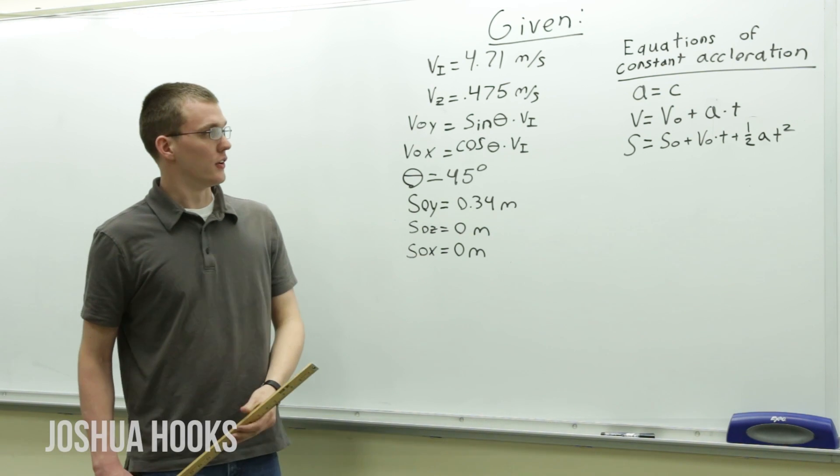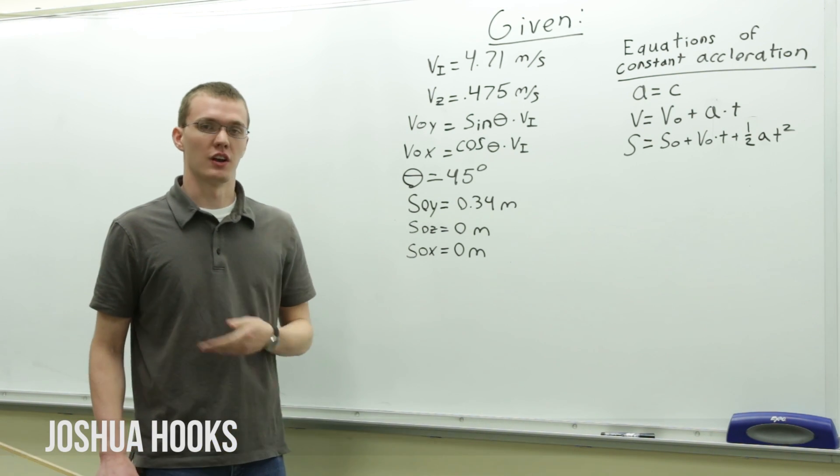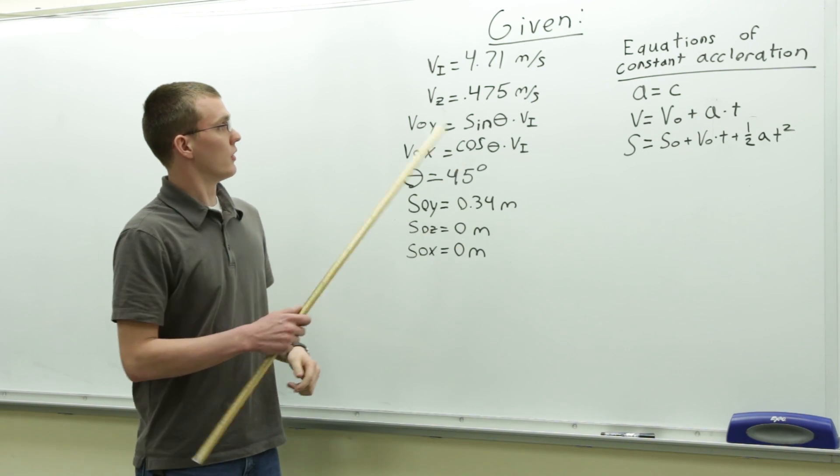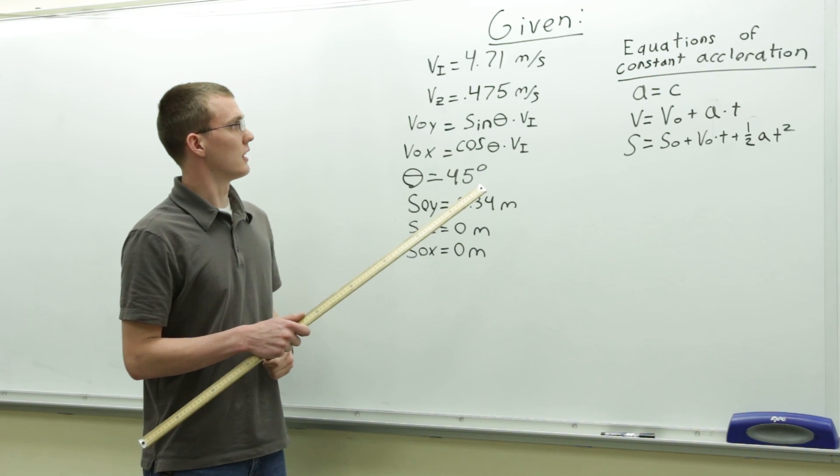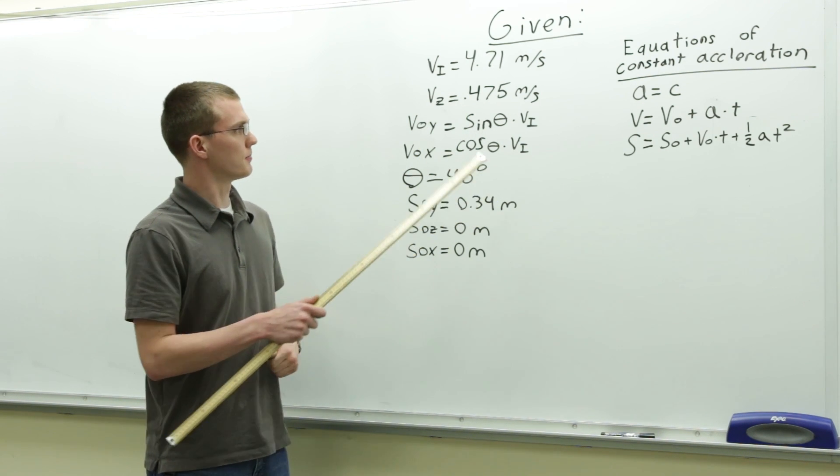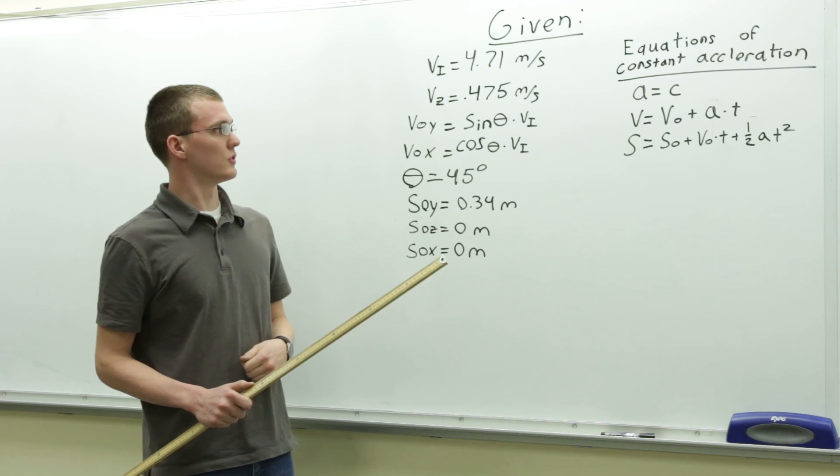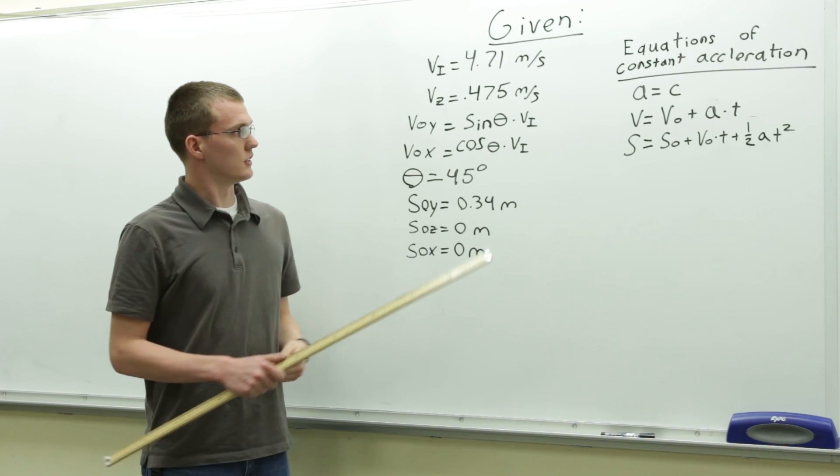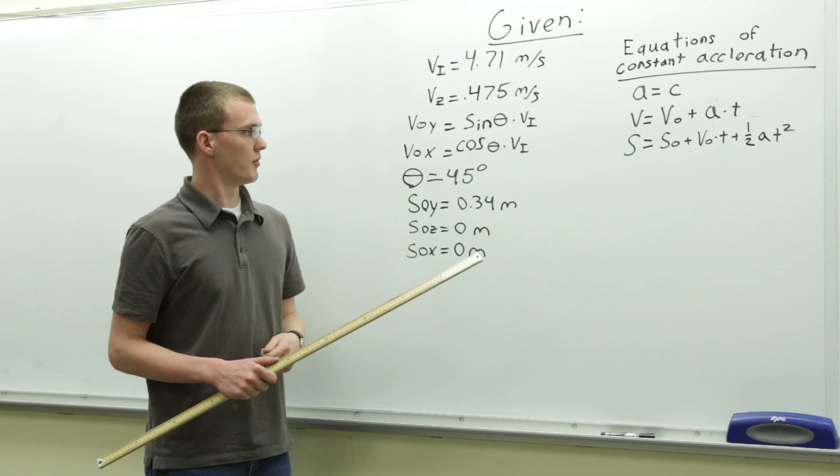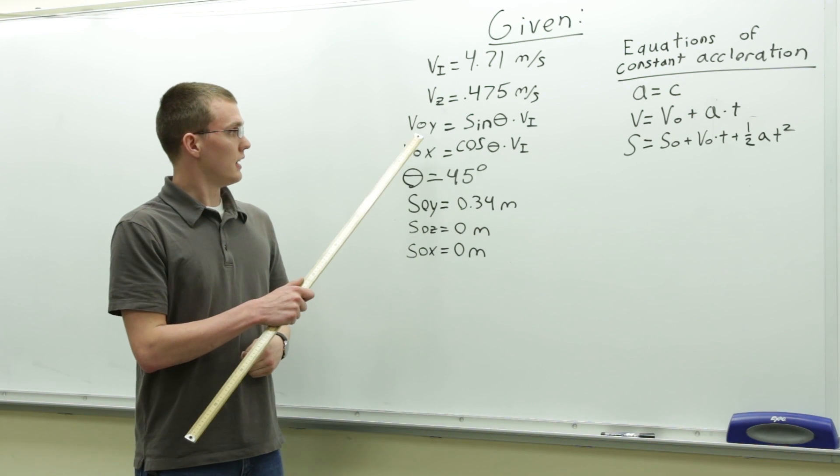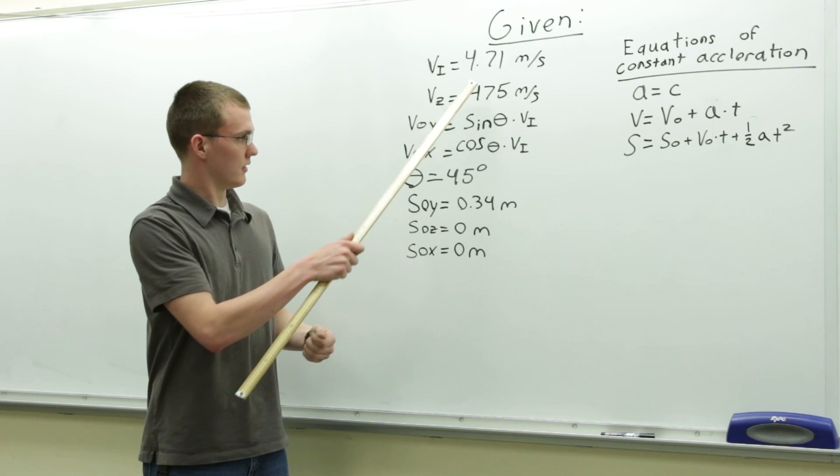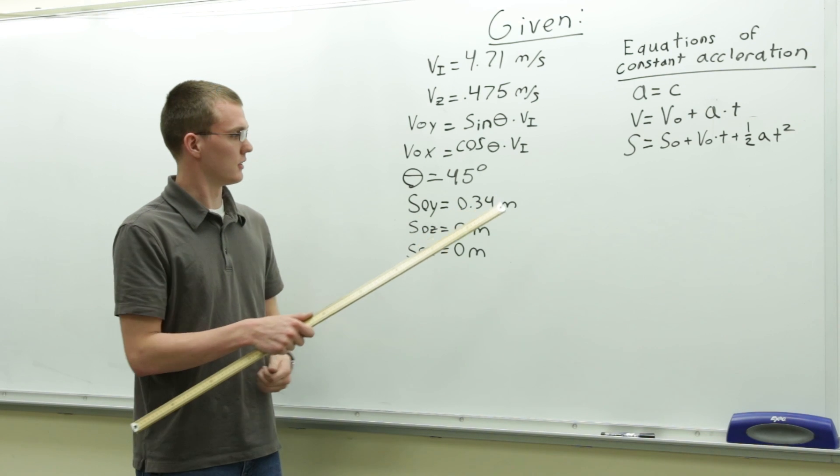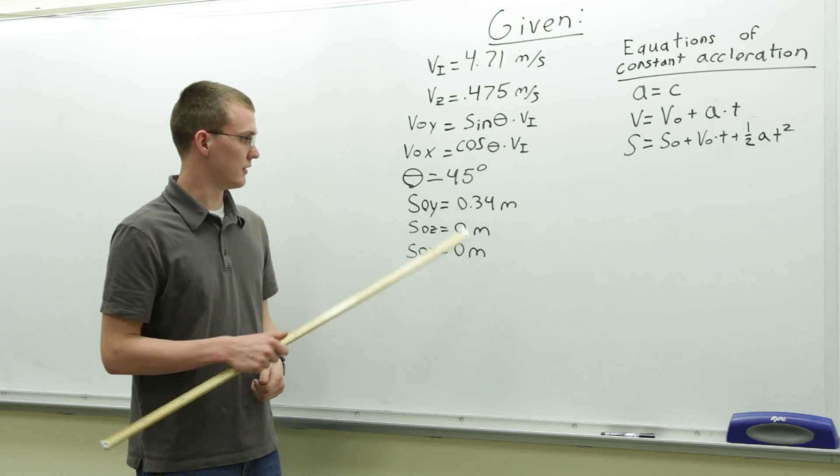I'm Josh Fooks, and I'm with the Dynamics Group. I'm going to talk you through the equations on how we predicted where the ball was going to hit and where to place the bar. First, we start with our givens. We measure an initial velocity in the x and the y direction with the velocity of 4.71 meters per second. Then, using the ultrasonic sensors you saw in the demo, we measured a z-direction velocity of 0.475 meters per second. To get the velocity in the y direction, you take that given velocity, multiply it by the sine of the angle for the y direction and the cosine of the angle for the x direction. In our case, the angle is 45 degrees.